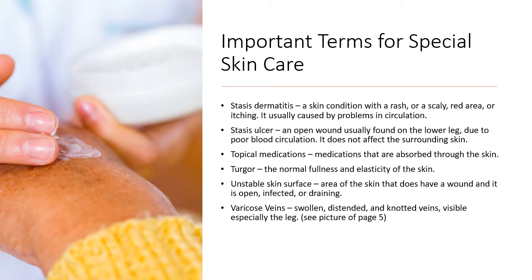Stasis dermatitis is a skin condition with a rash, scaly red area, or itching, usually caused by problems in circulation. A stasis ulcer is an open wound usually found in the lower leg due to poor blood circulation, and it does not affect the surrounding area. Topical medications are medications that are absorbed through the skin. Turgor is the normal fullness and elasticity of the skin. We test skin turgor by gently pinching a piece of skin on the back of the hand and letting go. If the skin stays in the pinched position, the person has poor skin turgor — a sign of dehydration. If the person has very tight and shiny skin, this can be a sign of edema.